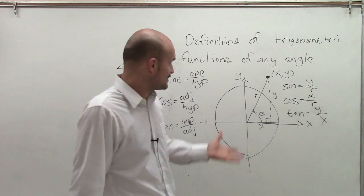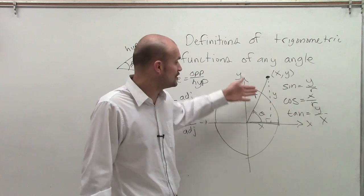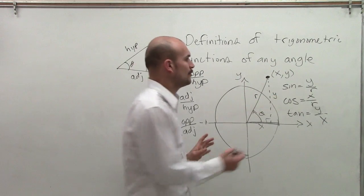Now, if you don't know what your radius is, we have a right triangle. Therefore, you can use the Pythagorean theorem to determine what your r is. You could do x squared plus y squared equals r squared.